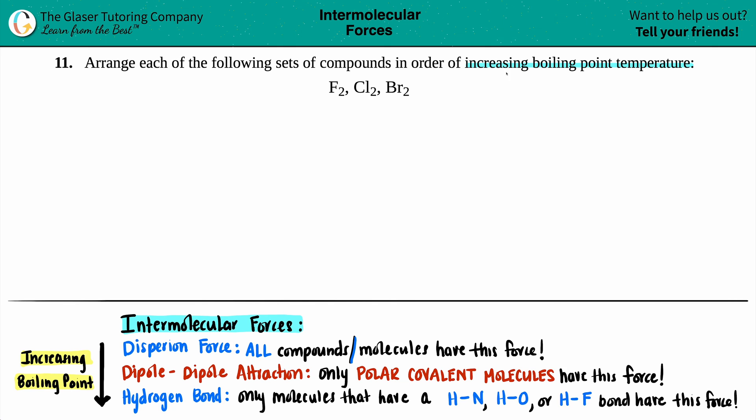Alright, so whenever we're trying to rank compounds specifically when they say we want to rank them by boiling point, boiling points are very closely linked to intermolecular forces. So instead of trying to decide what's going on with the boiling point, we could figure out what types of intermolecular forces these molecules have, and then from there we can see what's going on with the boiling point.